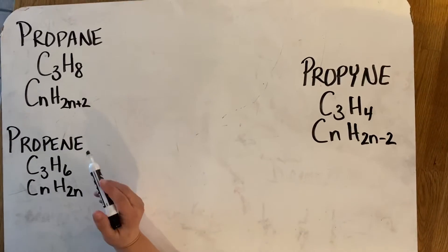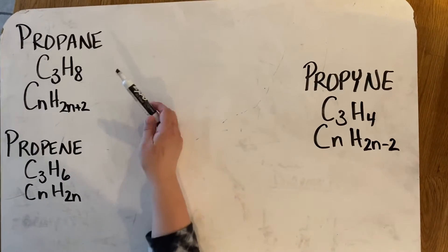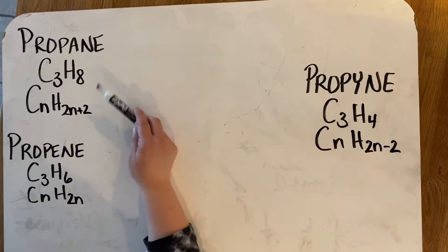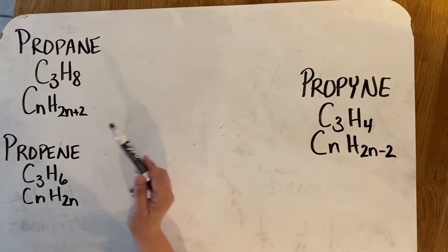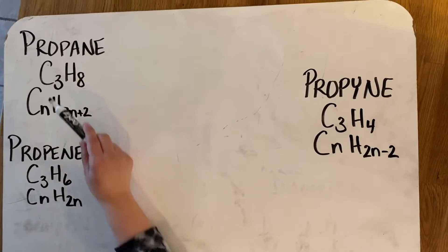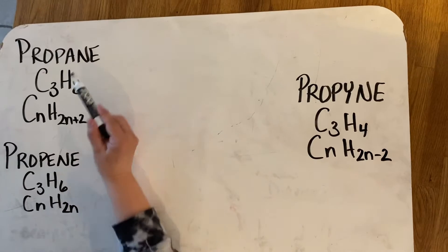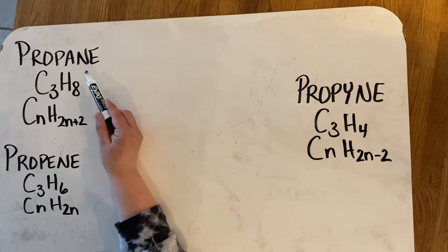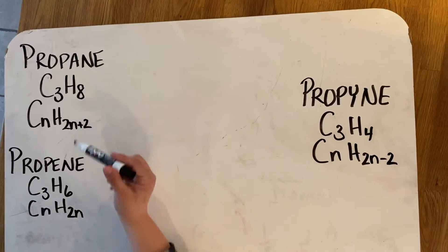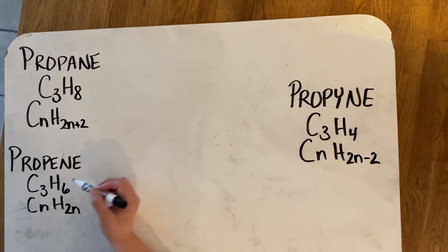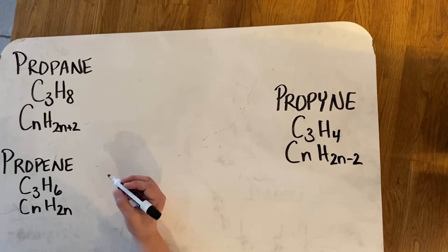In this case, I wanted to show you the difference between three hydrocarbons: propane, propene, and propyne. Hydrocarbons contain only carbons and hydrogens. Propane is saturated because it has only single bonds between the carbons. Propene and propyne are both unsaturated.